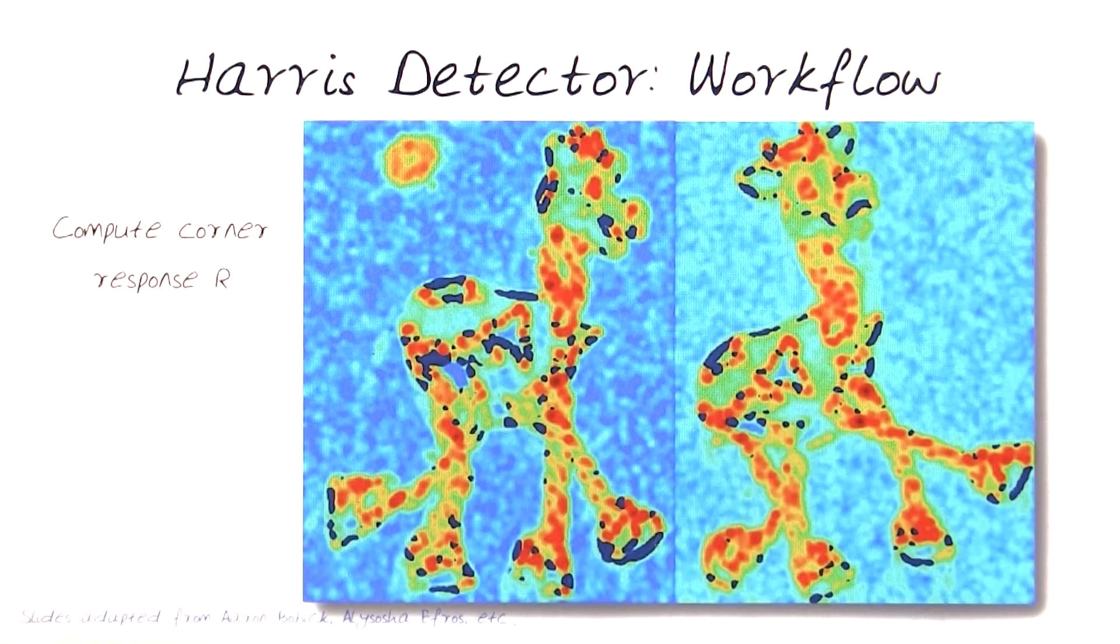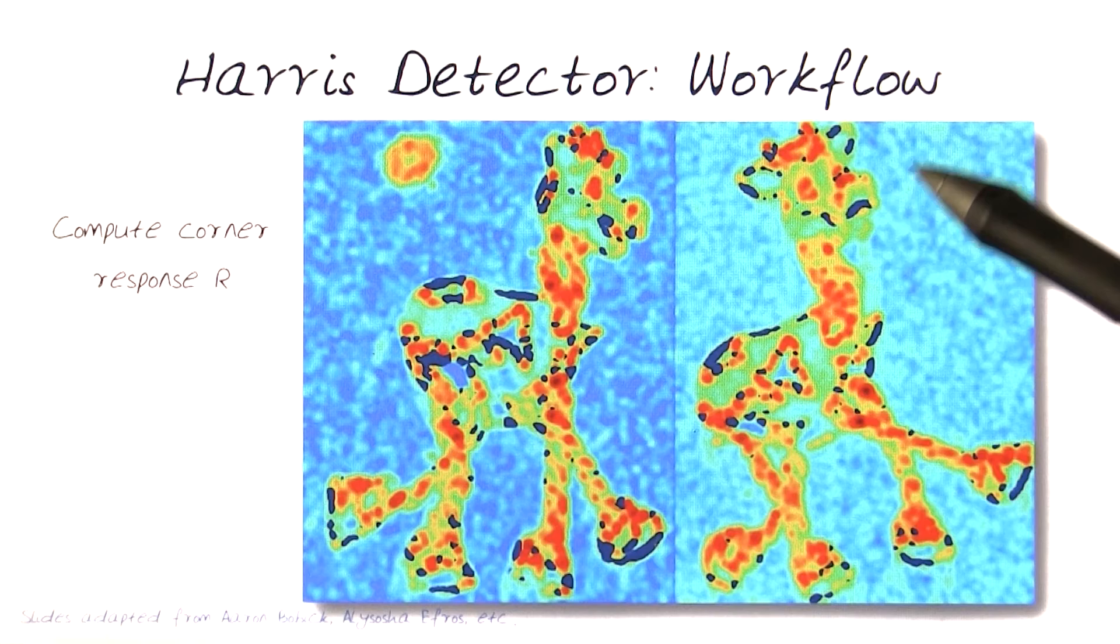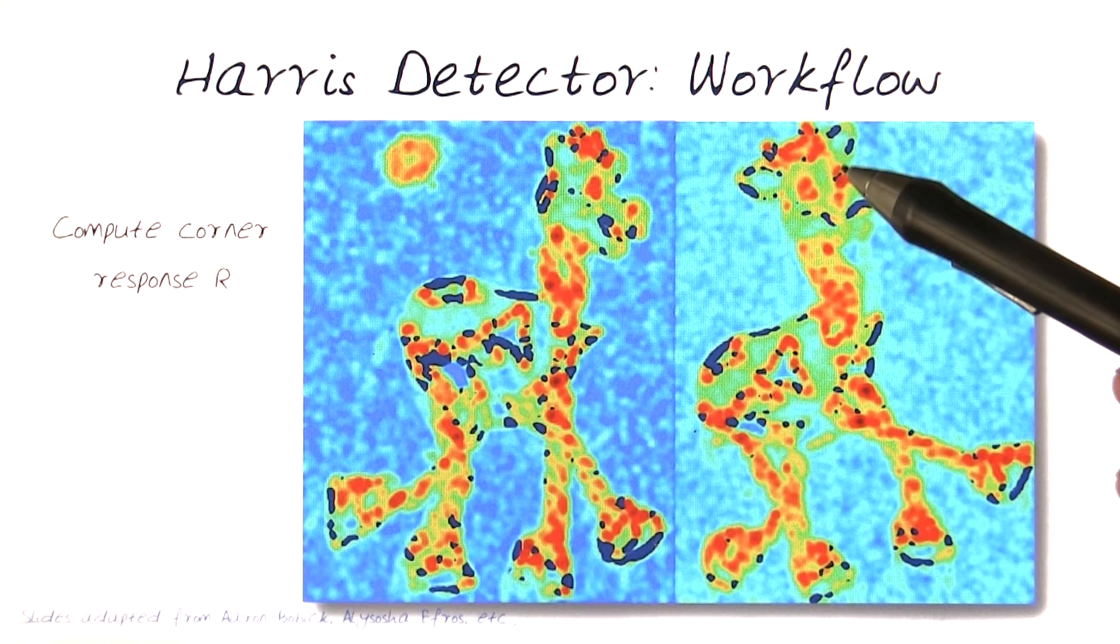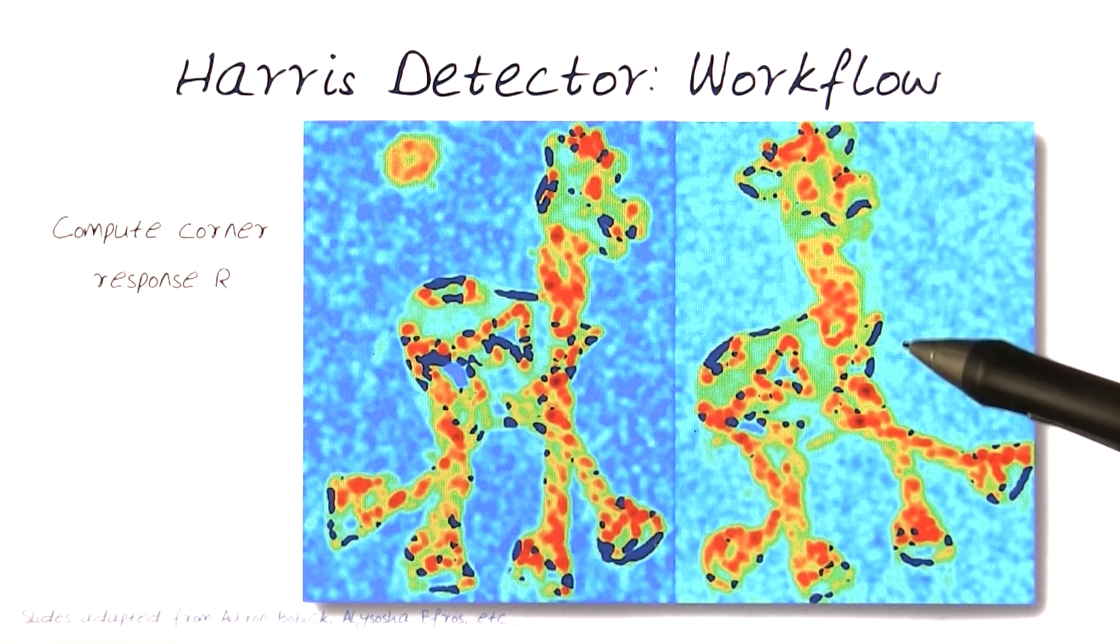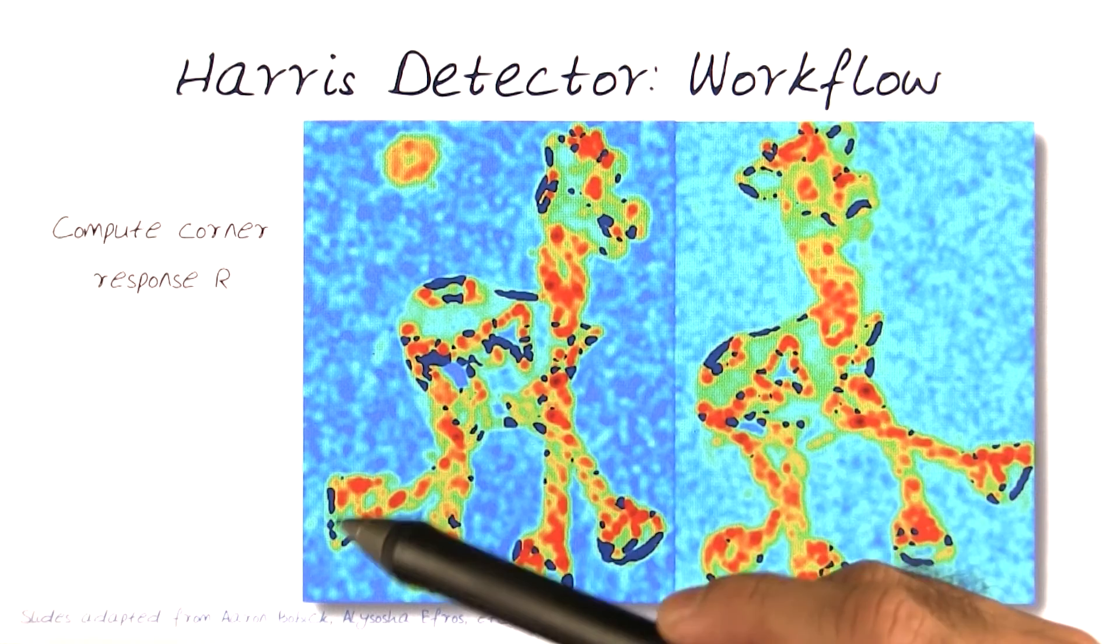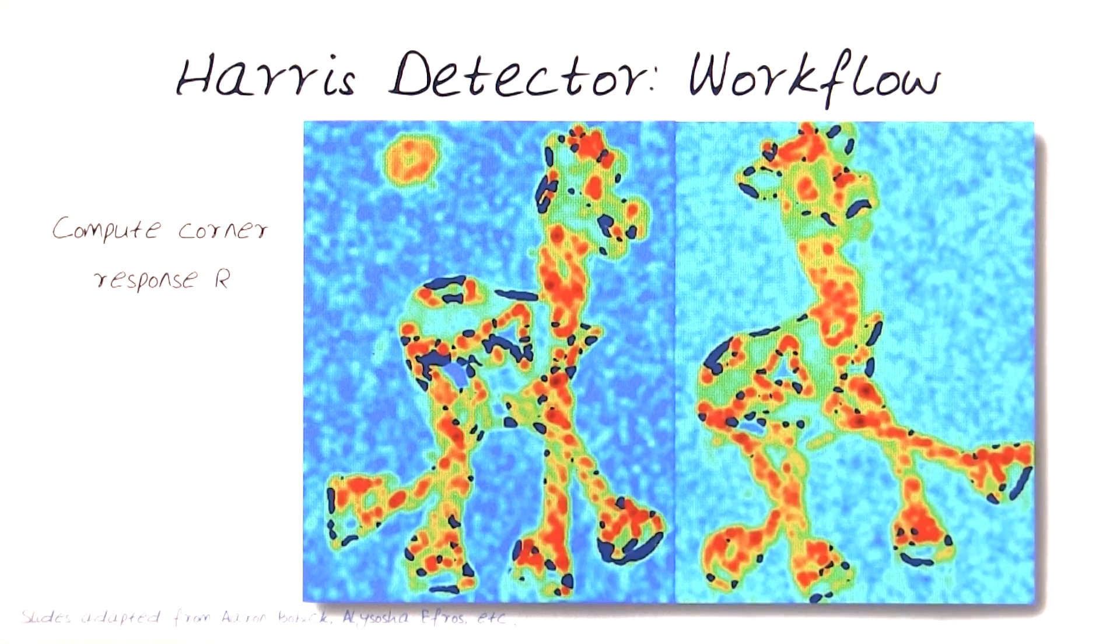So first, of course, by running through, we basically now want to come up and compute the corner response function as we've looked at for this image. This basically starts giving us all of these responses, and I've just colored, mapped them a little bit to kind of point out where the higher cost functions are, which are all of the bright red ones. And that's where most of the interesting corners are being found in this image.